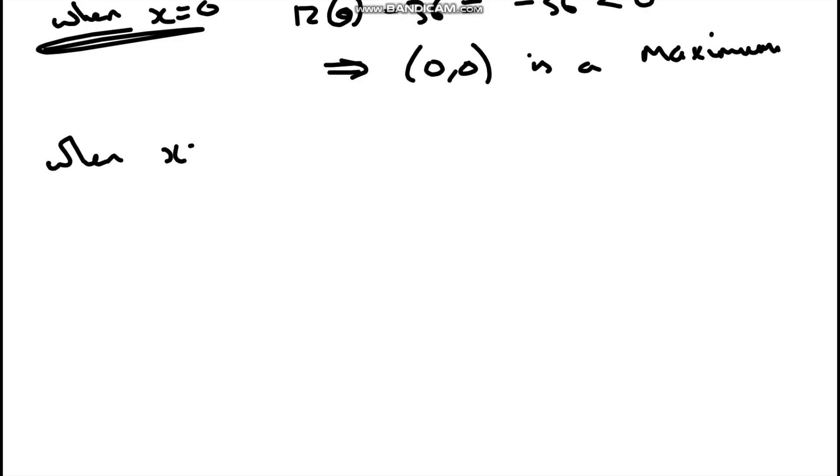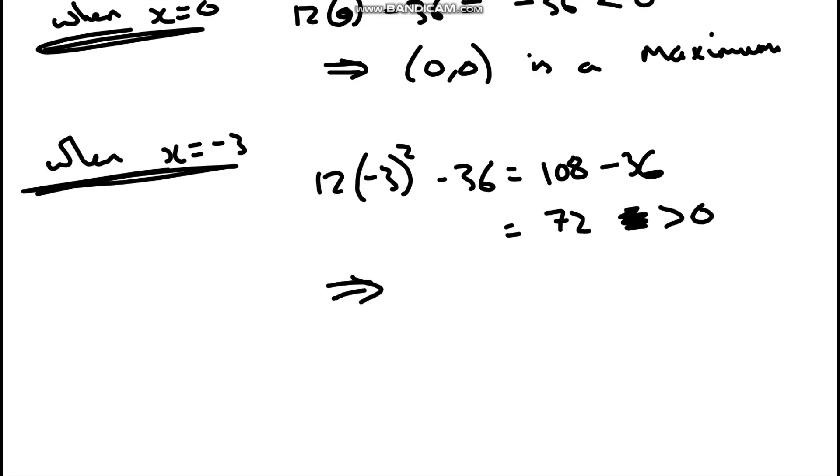When x equals negative 3, we're going to have 12 lots of negative 3 squared take away 36. Negative 3 squared is 9, multiplied by 12 is 108, take away 36. And this is going to give me 72. This is greater than 0. So this is going to tell us that (-3, -81) is a minimum.